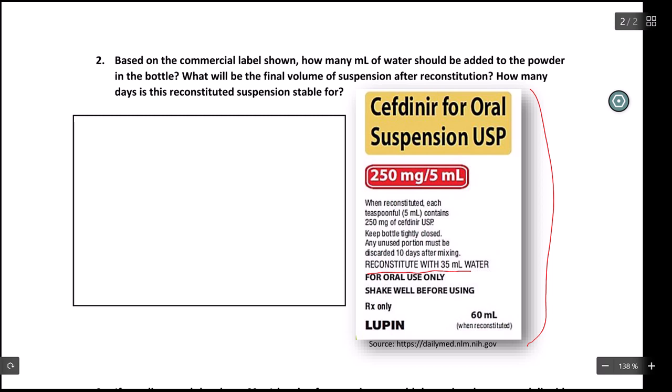So how much water is going to go into this? 35 mLs. If you also look, it says that this is a 60 mL bottle when reconstituted. So we're going to add 35 mLs of water into this bottle. And the volume is going to magically go up to 60 mLs. But that magic happens because there's powder in there. So the powder takes up space.